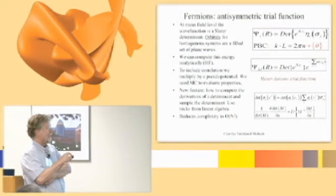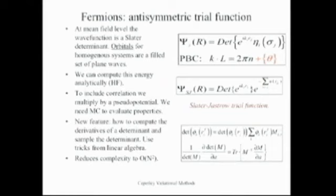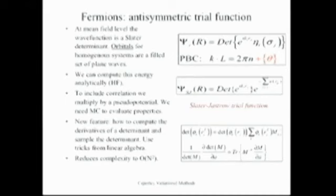You would doubly occupy each of the 50 lowest states because of spin coordinates — each plane wave state has a spin-up and spin-down particle. You need an anti-symmetric function, and this is anti-symmetric: if you exchange two coordinates, R1 with R2, two columns in the Slater matrix exchange, giving a minus sign. The condition on the plane waves is this K. For the moment, set theta equal to zero. If L is the size of the box, K is 2 pi N over L, where N is some integer, describing which state you're filling.